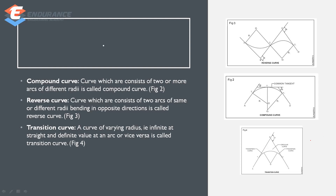A compound curve consists of two or more arcs of different radii. A reverse curve has arcs bending in opposite directions. A transition curve is a curve of varying radius — from infinite at the straight end to a definite value at the arc end, or vice versa — and is known as a transition curve.